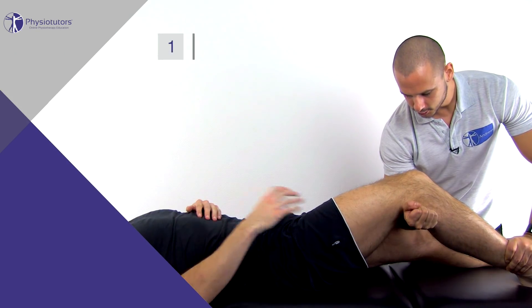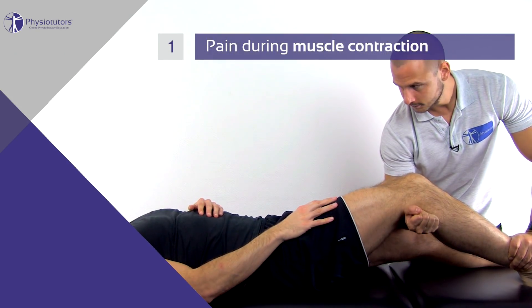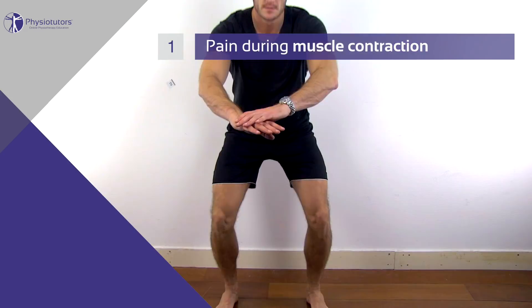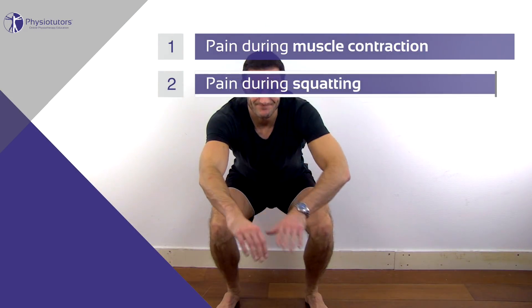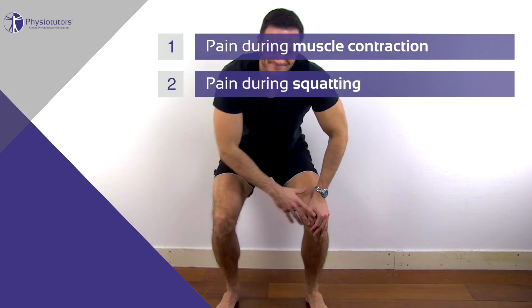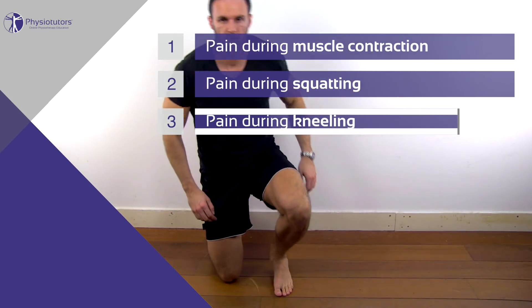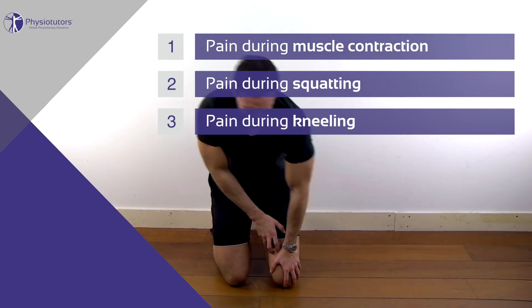The items of the cluster were the following: 1. Pain during muscle contraction, 2. Pain during squatting, and 3. Pain during kneeling.